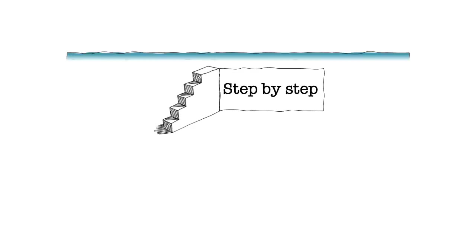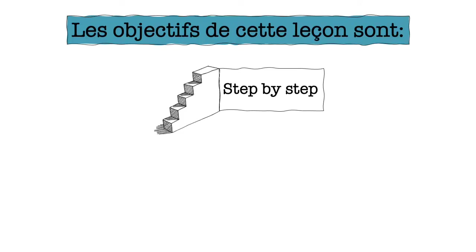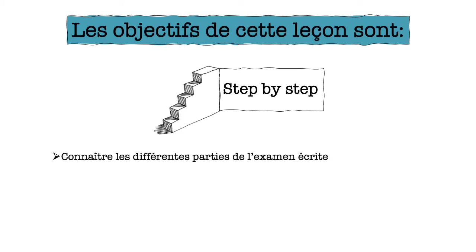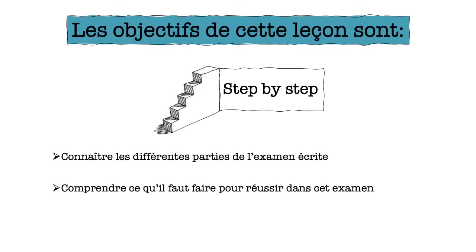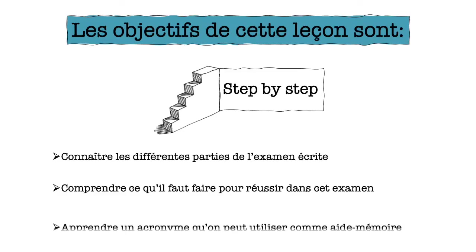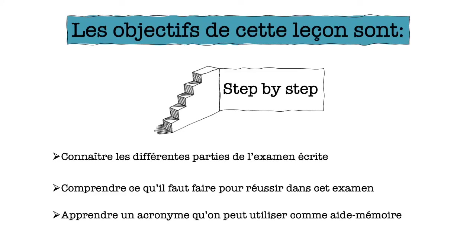Les objectifs de cette leçon sont connaître les différentes parties de l'examen écrite, comprendre ce qu'il faut faire pour réussir dans cet examen, et apprendre un acronyme qu'on peut utiliser comme aide-mémoire. The objectives of this lesson are to get to know the different parts of the written exam, to understand what one must do to succeed in this exam, and to learn an acronym that we can use as an aide-mémoire — a memory aid — to help us remember the criteria for success when we're in the exam.